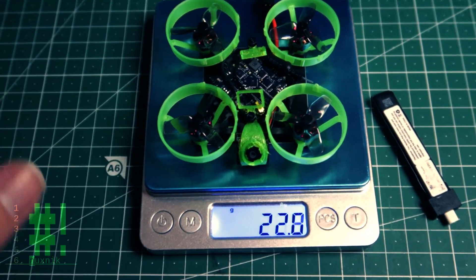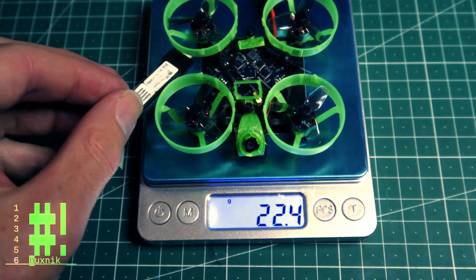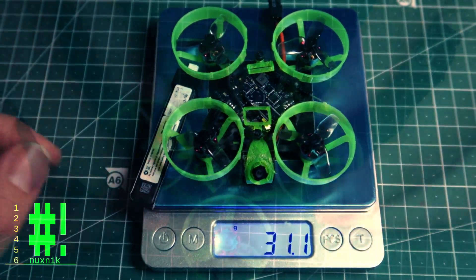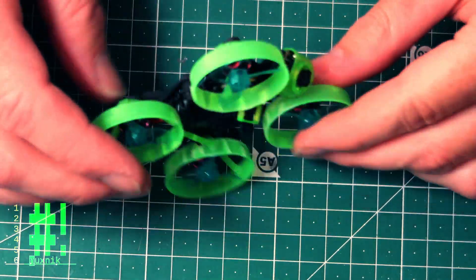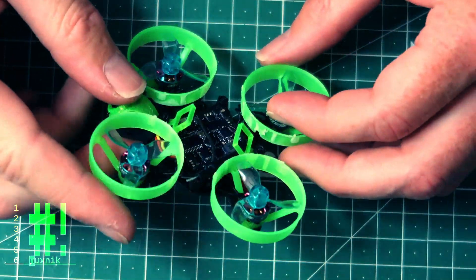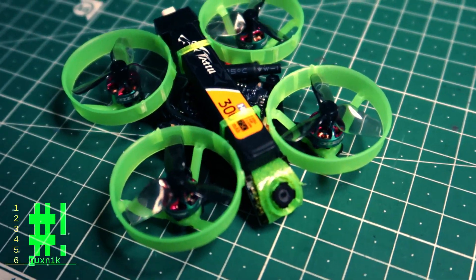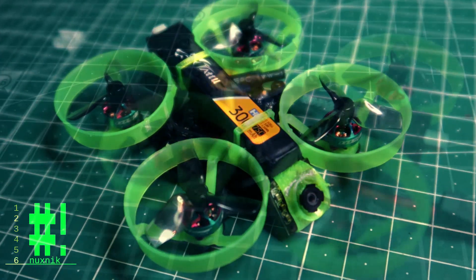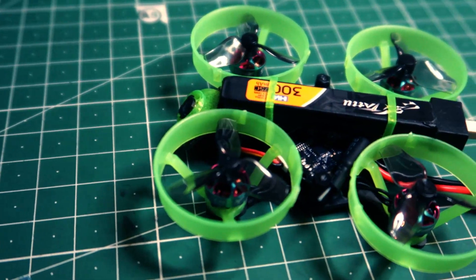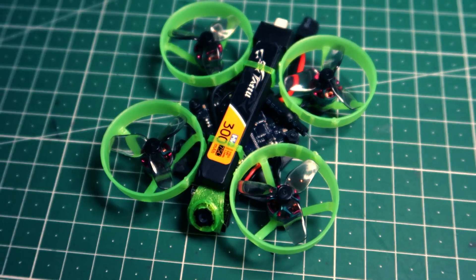The dry weight for this build is 22.6 grams. The total weight with the battery comes to 31.1 grams. The overall weight is a bit high. However, it can be improved in future iterations. For example, the UFL connector and dipole antenna add extra weight. Using a lighter, different flight controller could be an option. For example, the Happy Model Diamond F4 would lighten the load. One could also use peak instead of steel screws for the motors. As I said, this drone is a prototype and therefore still a work in progress.